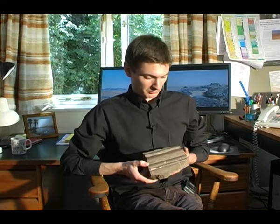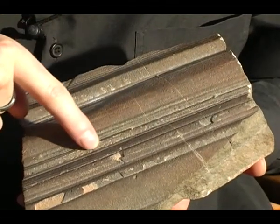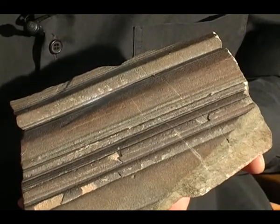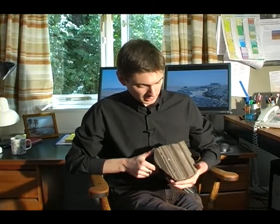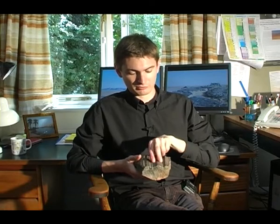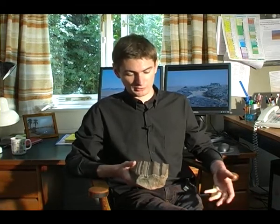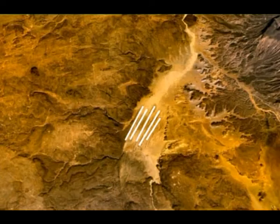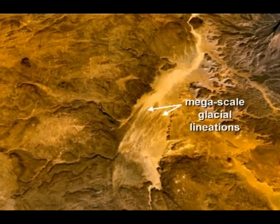Here is an example of one of these striated pavements — a hand specimen from the Gargaf Arch in the Mazook Basin. There are perfectly parallel grooves separated by ridges with a V-shaped cross section. Scaled up to a metre or so per ridge, this is what you also find at outcrop: very large scale ridges and grooves. Scaling up further, similar features appear on satellite imagery, and at the very largest scale — several kilometres in length — these are what's known as mega-scale glacial lineations.